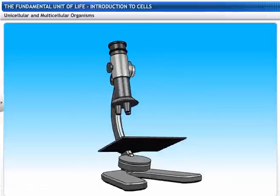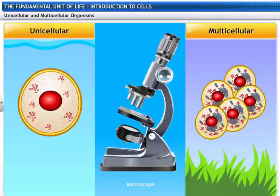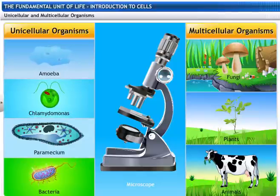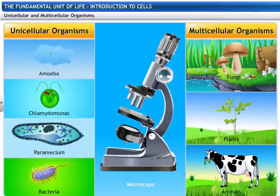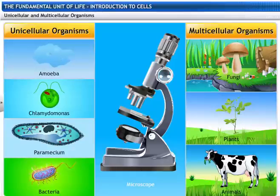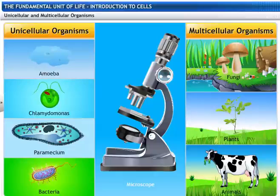The development of the microscope led to the discovery of single and multiple celled organisms. Organisms like amoeba, chlamydomonas, paramecium and bacteria have single cells which constitute the whole organism. These organisms are called unicellular organisms. On the other hand, in organisms like fungi, plants and animals, multiple cells group together to form tissues. These organisms are called multicellular organisms.